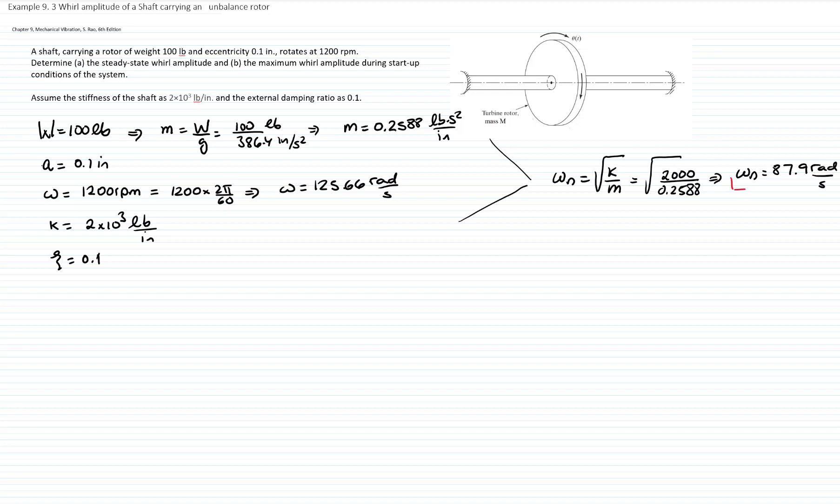With that ωn and the operating velocity of 1200 RPM, we can calculate r. And that is equal to 125.66 radians per second divided by 87.9, also radians per second, and gives me 1.43. I'm writing only two decimals, but please keep all the decimals to do your calculations.